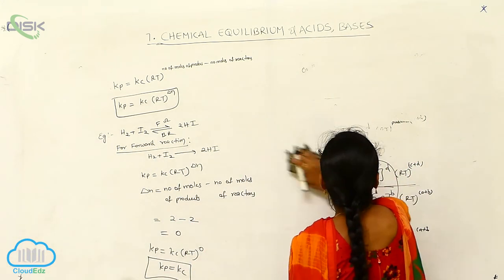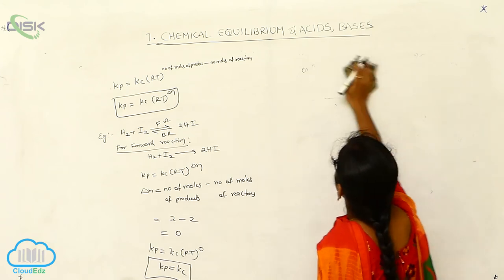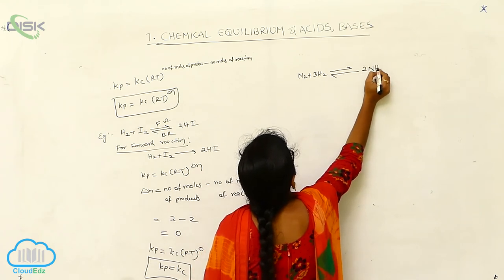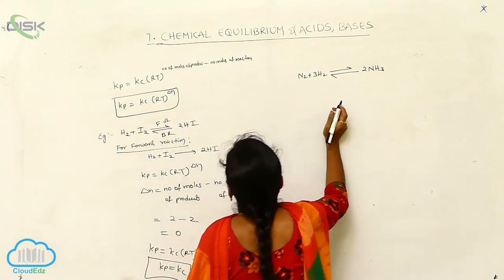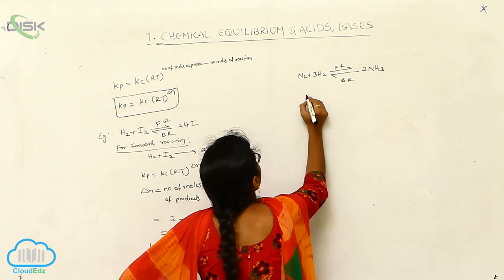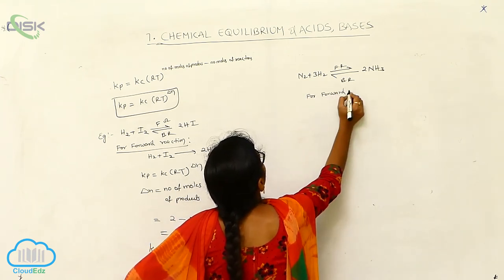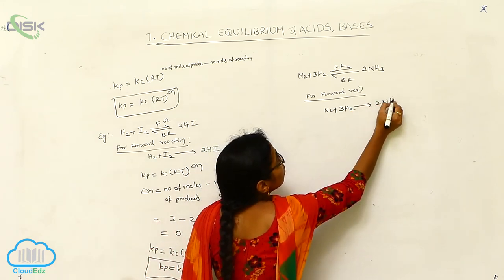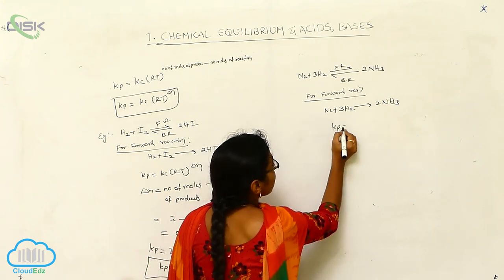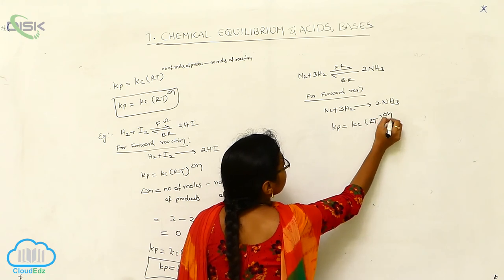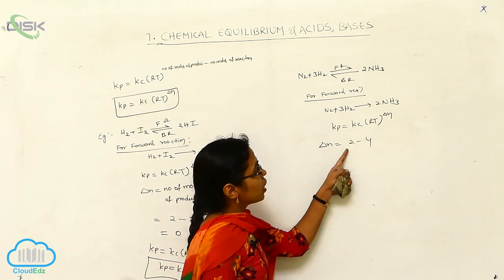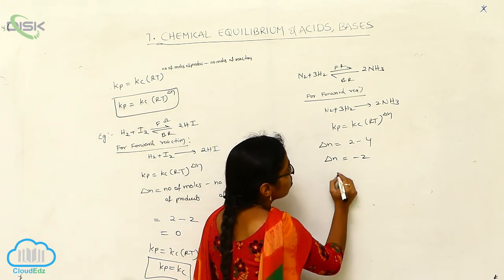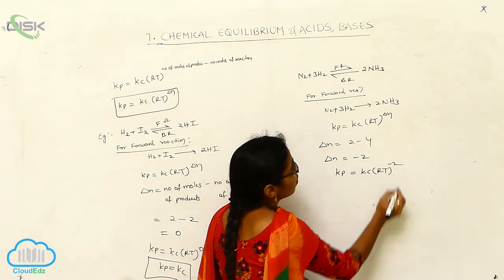For the backward reaction also, delta N is equal to 0, so Kp is equal to Kc. Next example: N₂ plus 3H₂ gives 2NH₃. For the forward reaction, Kp is equal to Kc · RT to the power of delta N. Delta N equals 2 minus 4, where 2 is the number of moles of products and 4 is the number of moles of reactants. So delta N is equal to minus 2, and therefore Kp equals Kc · RT to the power of minus 2.